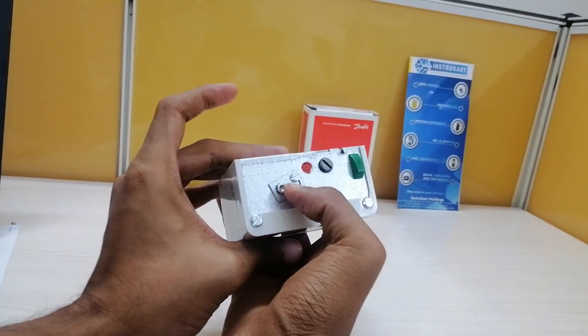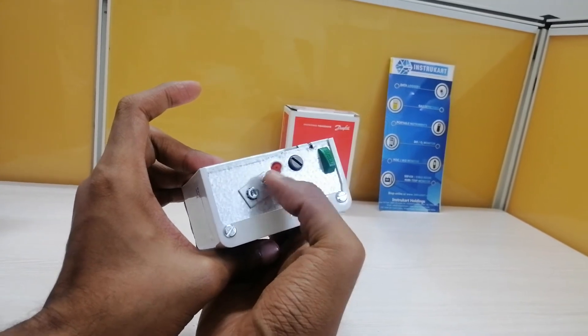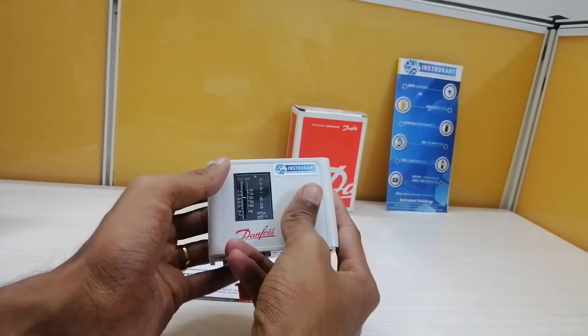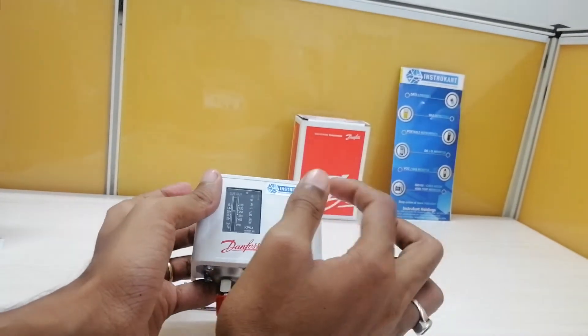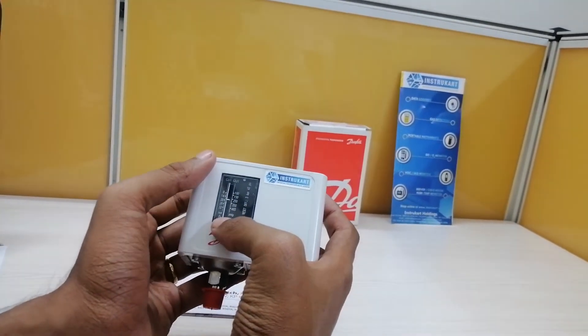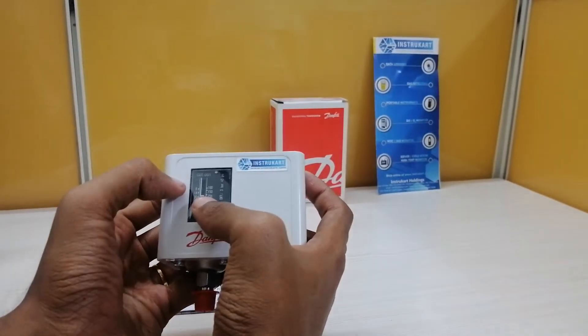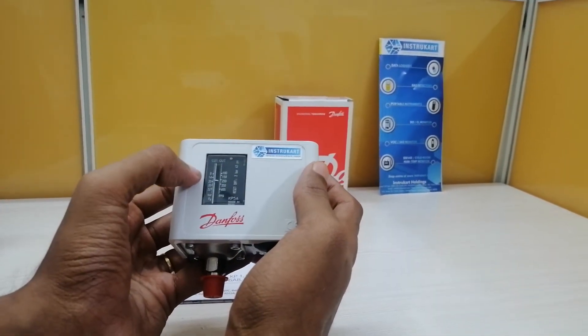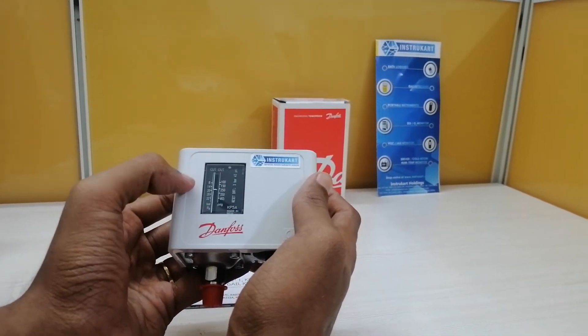This instrument can be opened with the help of screwdrivers. After that you can see the reset options and all. In this display, it is showing you the measuring range and differential range, which is 8 to 32 bar as I already told you.